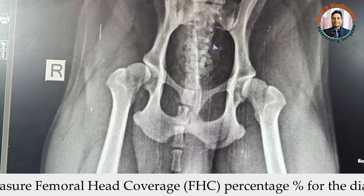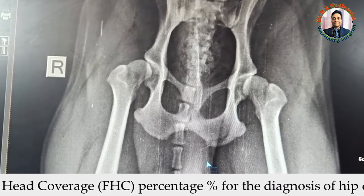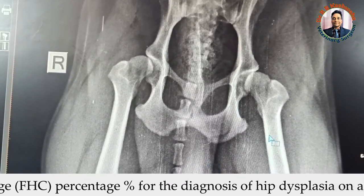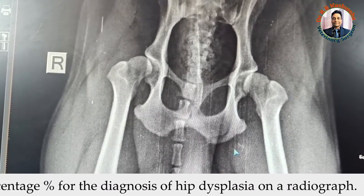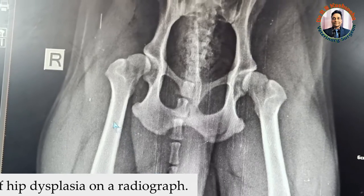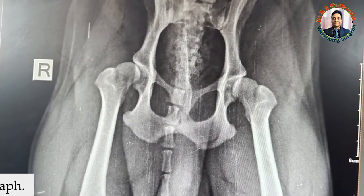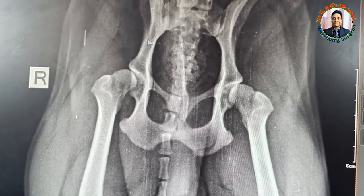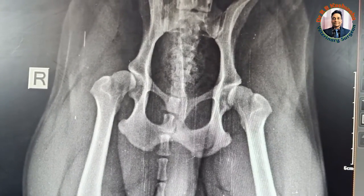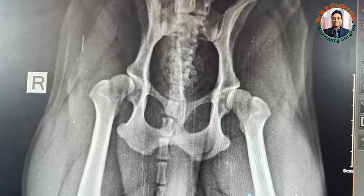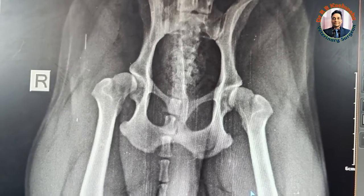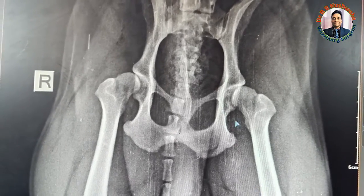You can see this is the ventrodorsal view of the hip joints. This view has been taken with both hind limbs extended, which is the ideal radiographic view for the diagnosis of hip dysplasia.